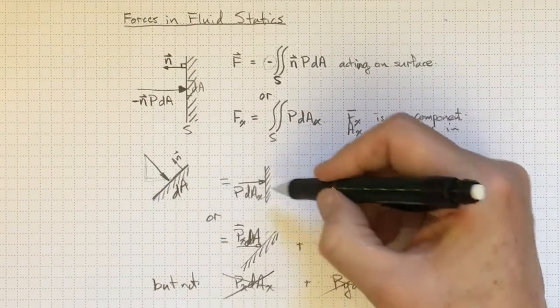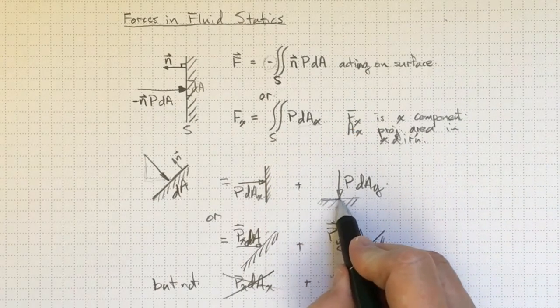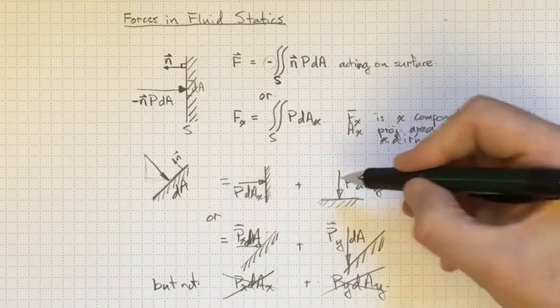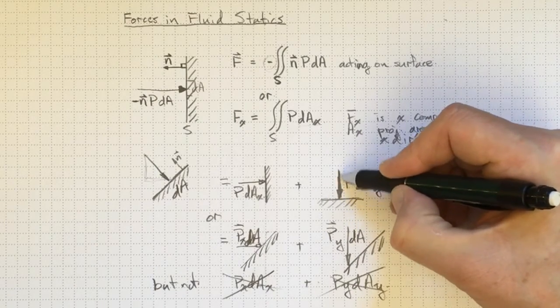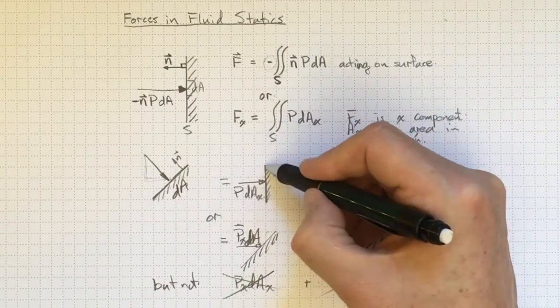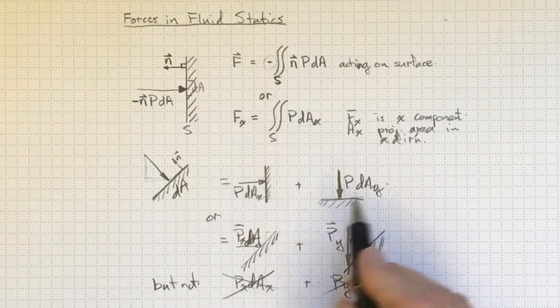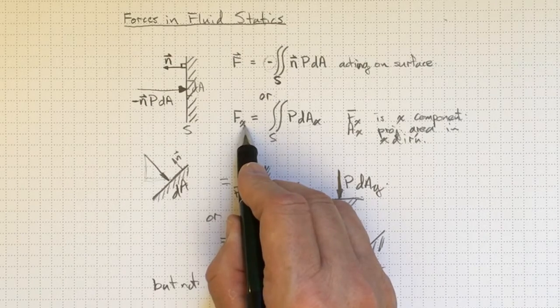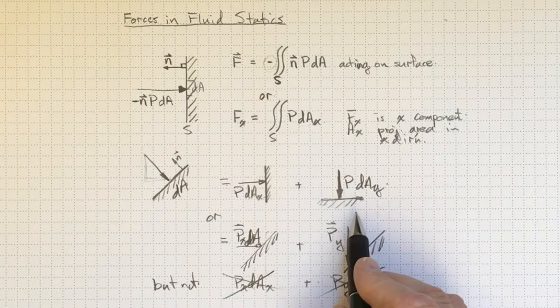I've got this area. I can consider it as made up of two projected areas, one in the x direction and one in the y direction. I will have the pressure force acting over each of these projected areas, and I can integrate those separately to get me the components Fx, or similarly to get me the Fy component.